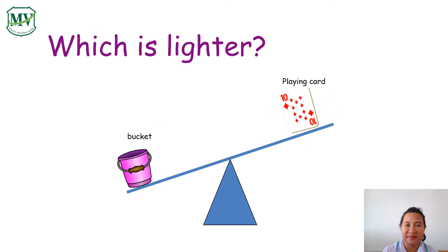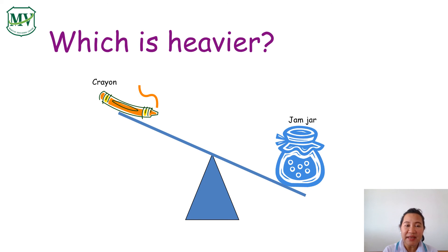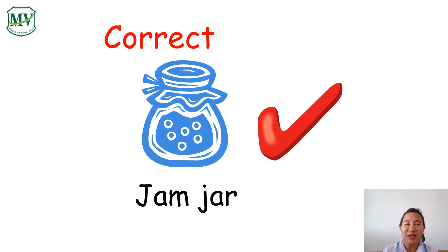Next — which is lighter: bucket or playing card? What is your answer? Next — which is heavier: crayon or jump jar? What is your answer? Correct. The jump jar is heavier compared to crayons.